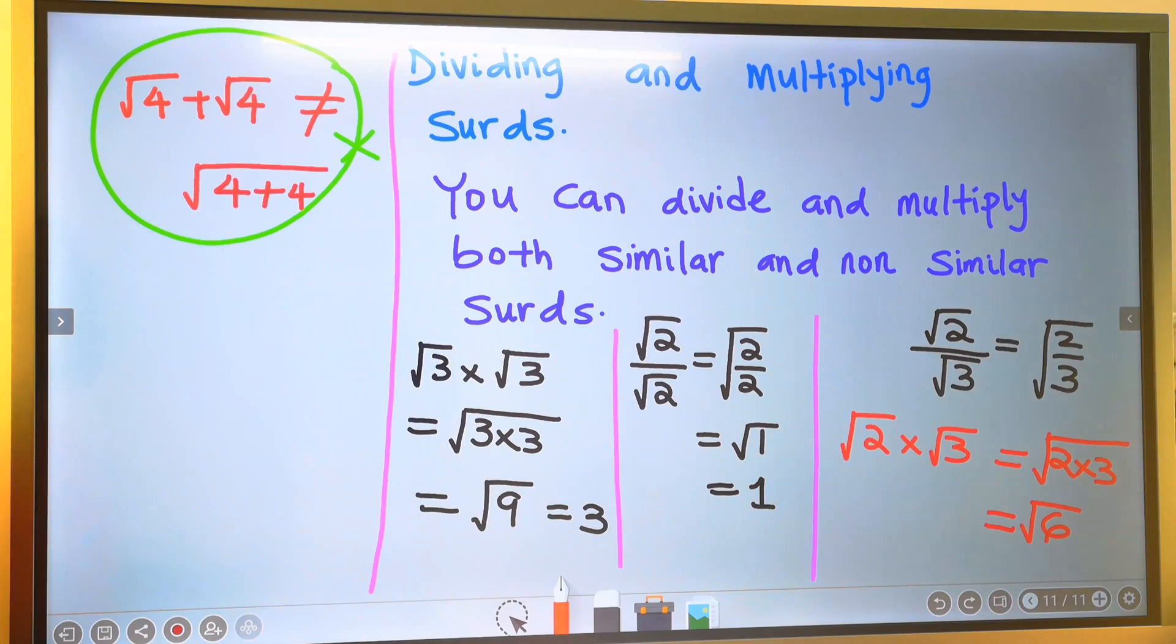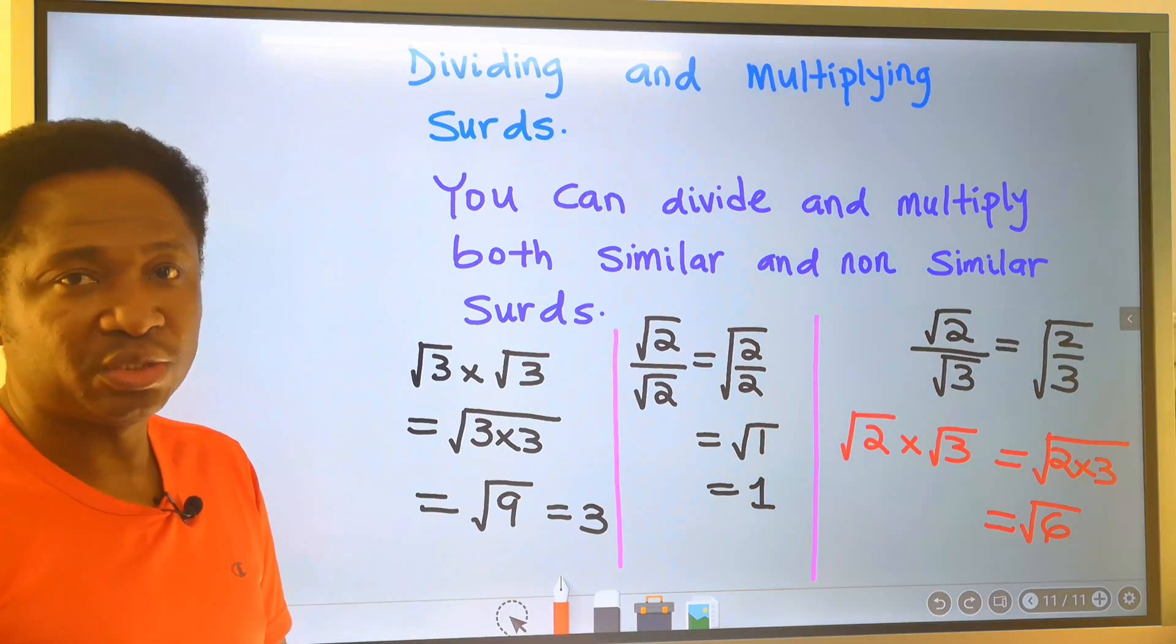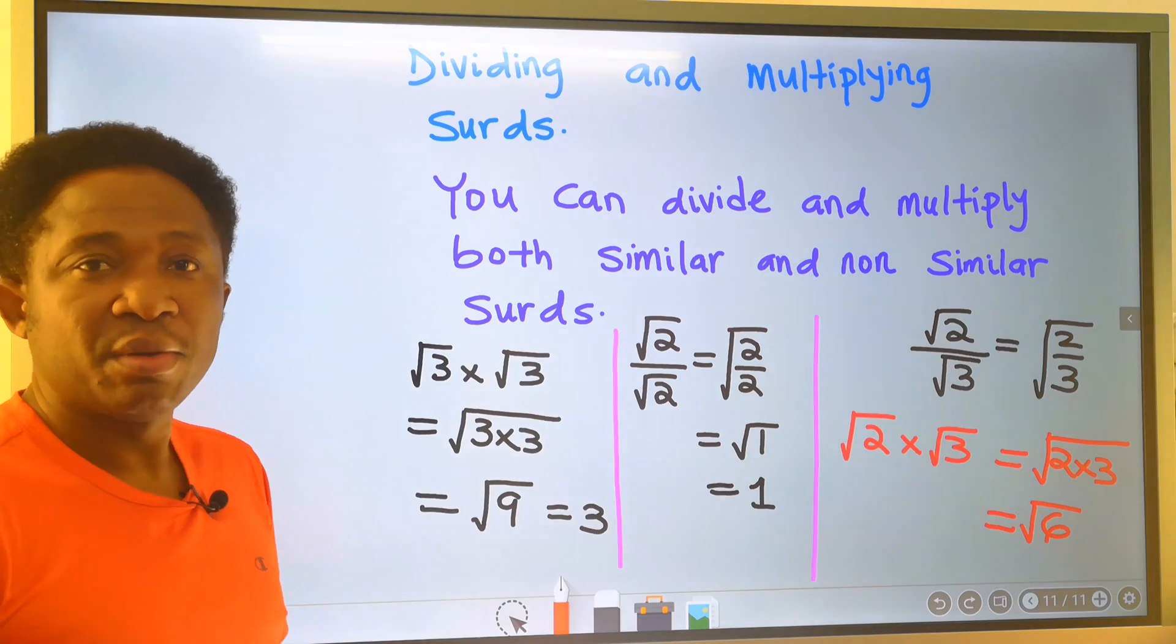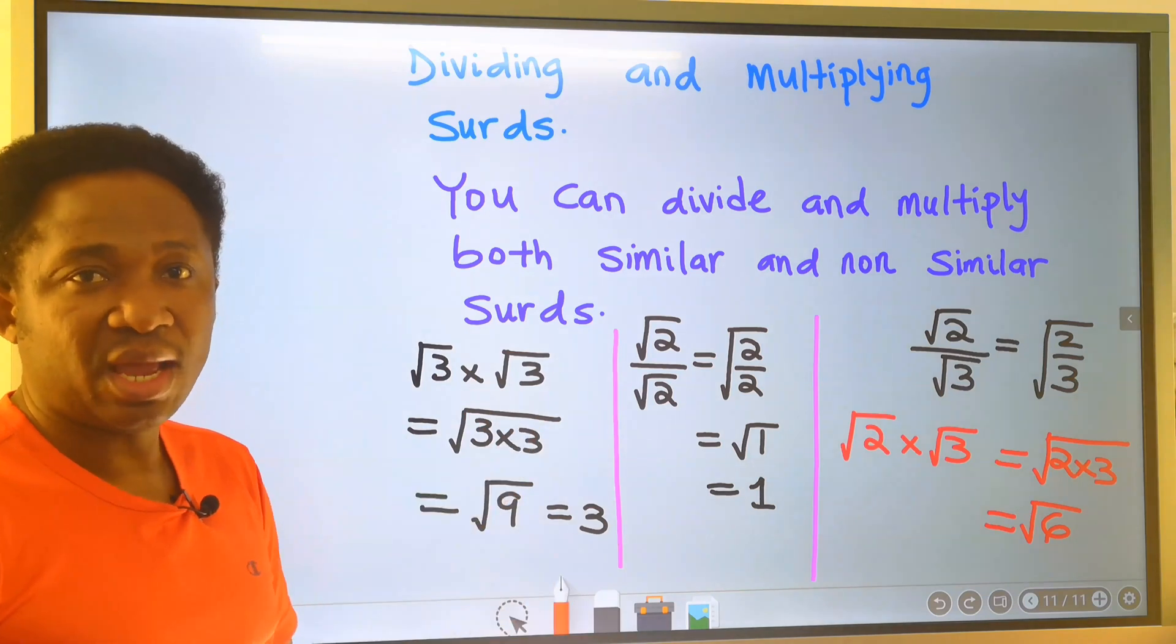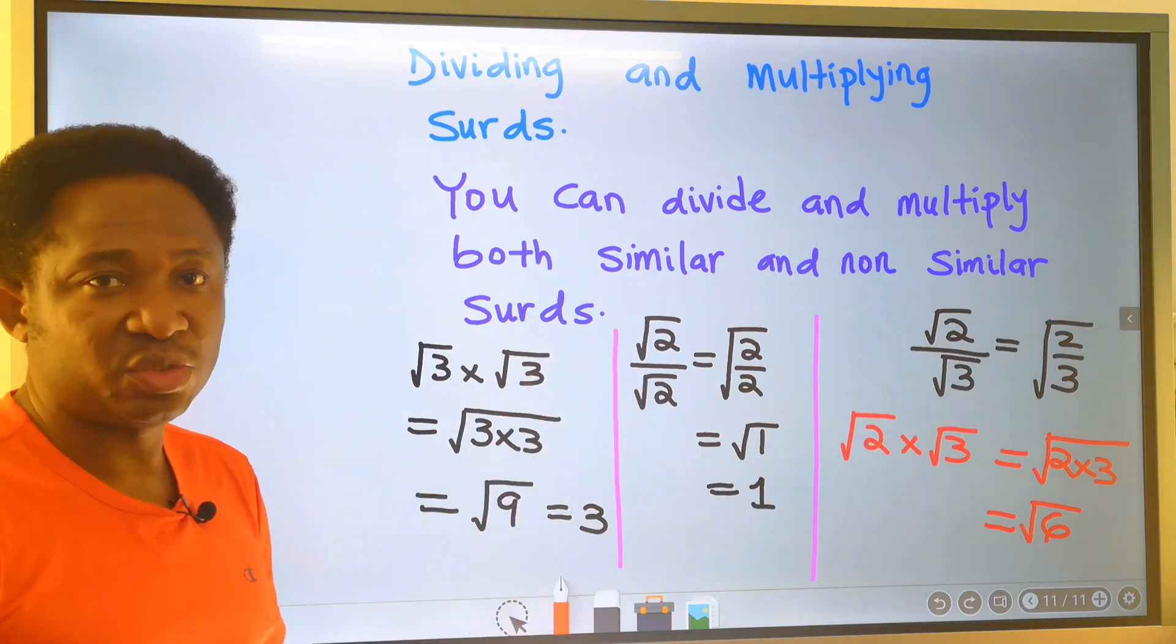In conclusion, you can divide and multiply both similar and different surds.